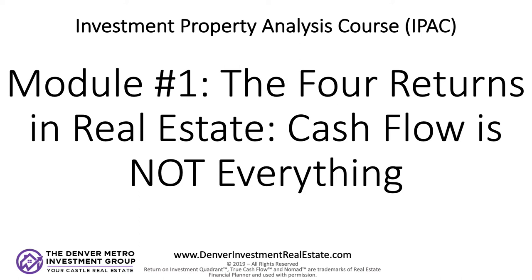The next quadrant is the cash flow return — out of all the returns, this is the metric people are most familiar with. Cash flow is simply your rent minus all your expenses for running the property minus your mortgage payments. I separate out operating expenses and mortgage payments because they're two different things. Operating expenses include insurance, taxes, property management, repairs and maintenance, capital expenditures, common utilities, landscaping, snow removal — everything you need to maintain the property and bring in rental income.